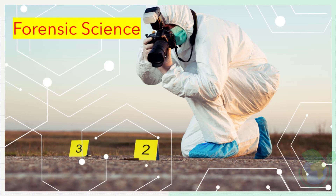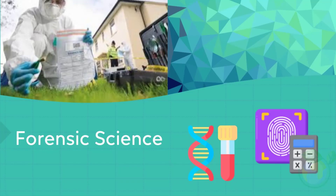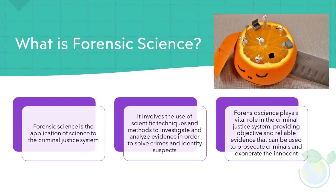What is Forensic Science? Forensic science is the application of science to the criminal justice system. It involves the use of scientific techniques and methods to investigate and analyze evidence in order to solve crimes and identify suspects. Forensic science plays a vital role in the criminal justice system, providing objective and reliable evidence that can be used to prosecute criminals and exonerate the innocent.